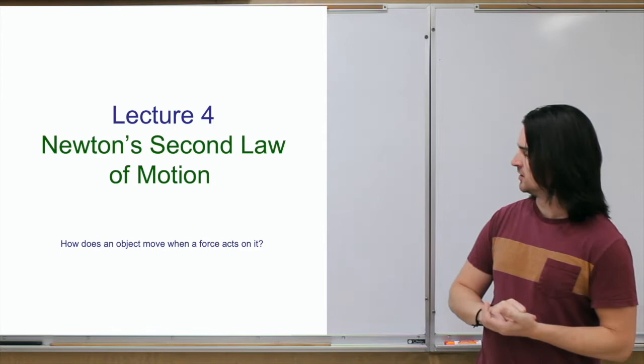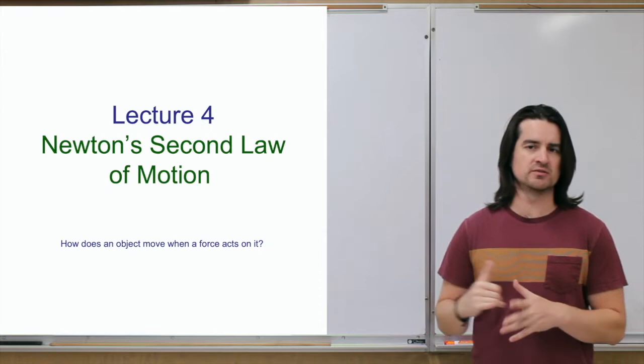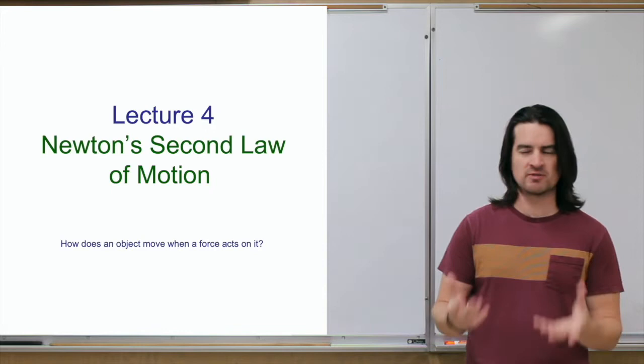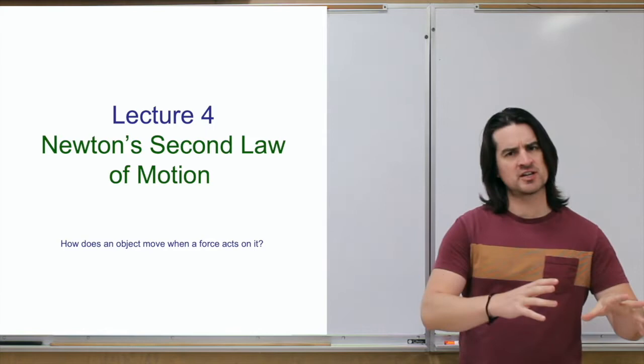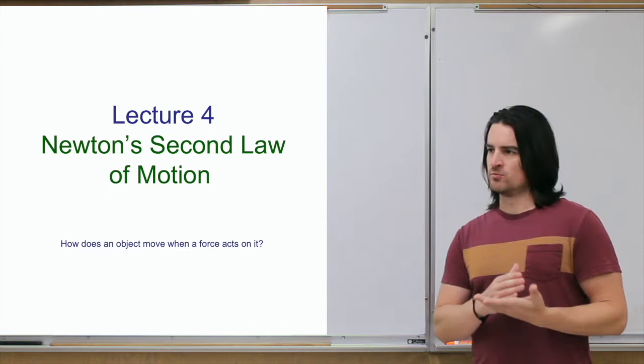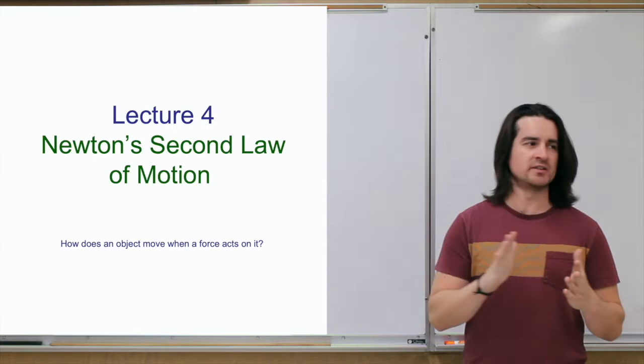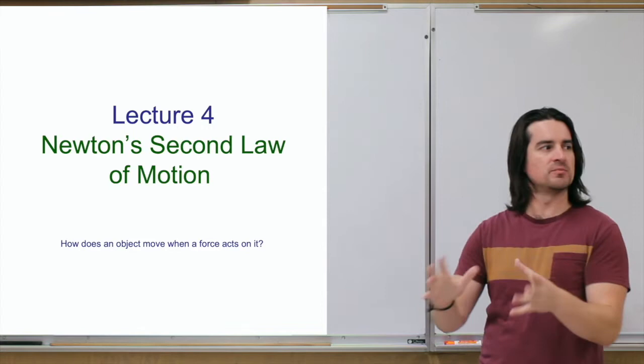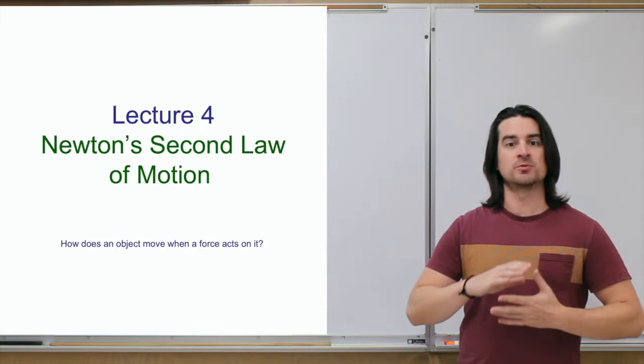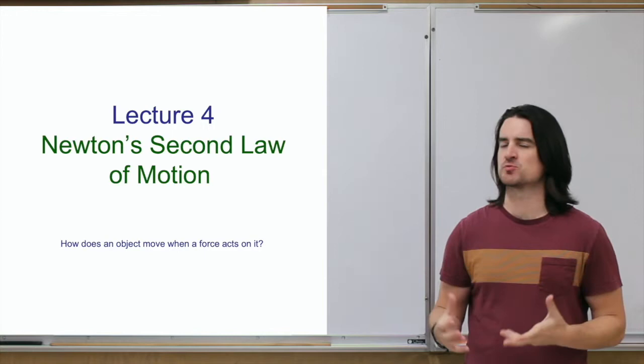In the previous lectures we looked at Newton's first law of motion, which is all about inertia — the fact that objects with mass don't want to change the way they're moving. So if they're at rest, they want to stay at rest; if they're in motion, they want to stay in that same uniform motion. We also looked at velocity, how we define the rate at which something changes its position, and then acceleration — if you change your velocity, that is what we call acceleration. We also talked a bit about force as something that essentially pushes or pulls on objects.